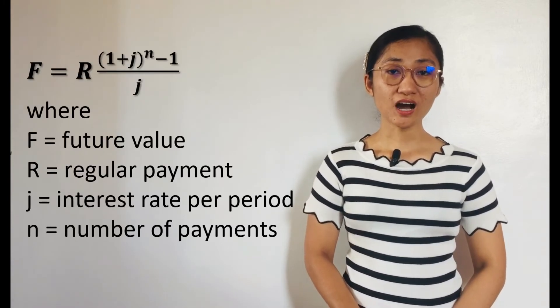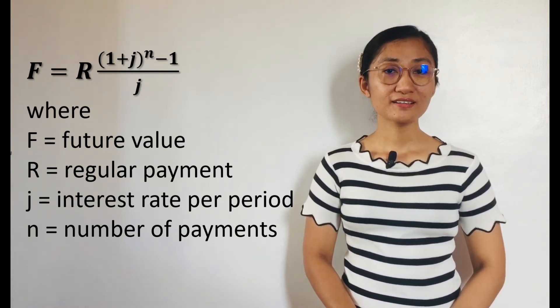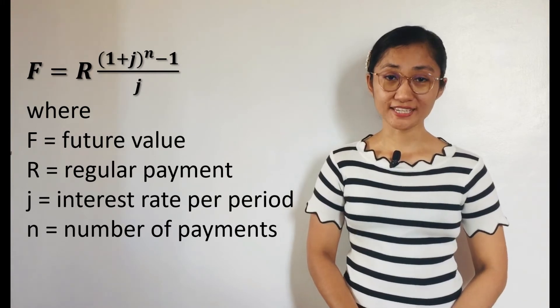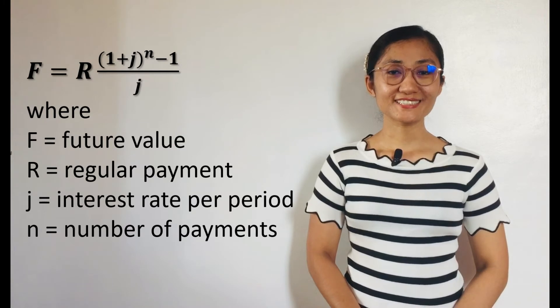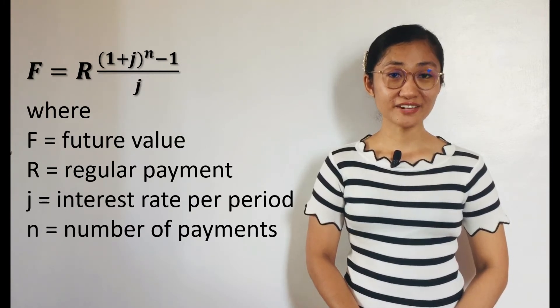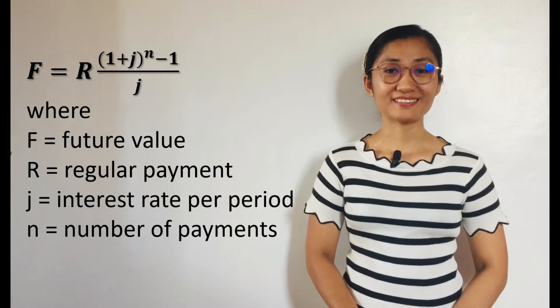In this lesson, we will focus more on ordinary Annuity and Annuity Certain. The formula to be used for the future value F of an ordinary Annuity is: F equals R times the quantity (1 plus J) raised to the N, minus 1, over J — where R is the regular payment, J is the interest rate per period, and N is the number of payments.